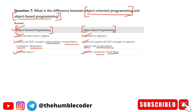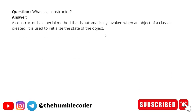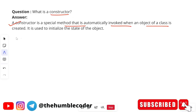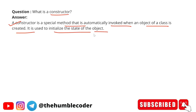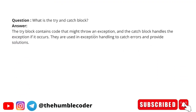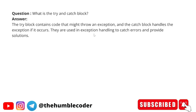What is a constructor? A constructor is a special method that is automatically invoked when an object of a class is created. It is used to initialize the state of an object. As we all know, a constructor is automatically invoked when the object of the class is created and it has the same name as the class.